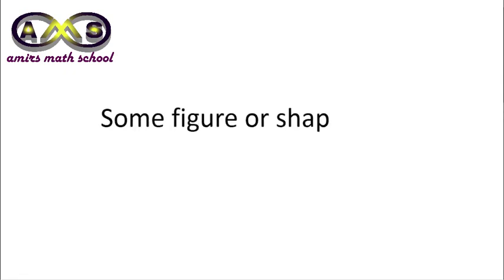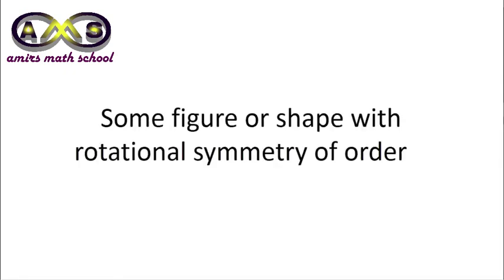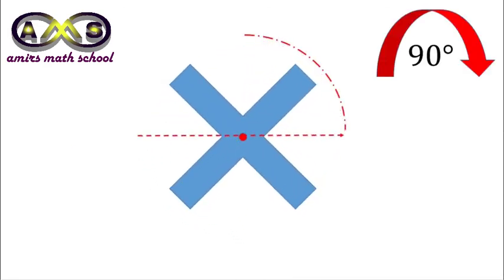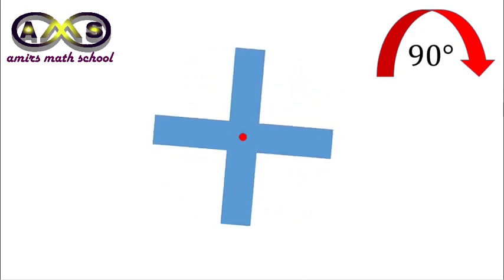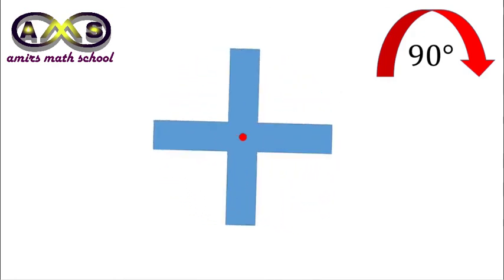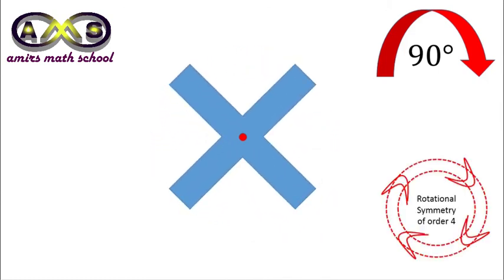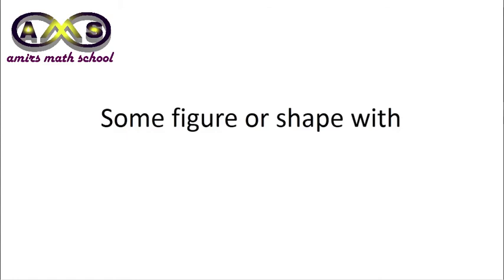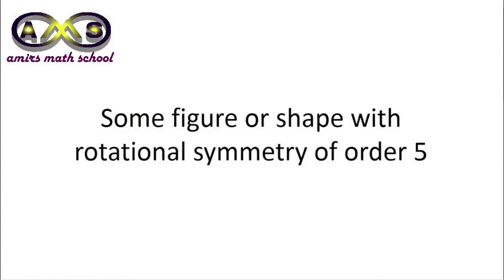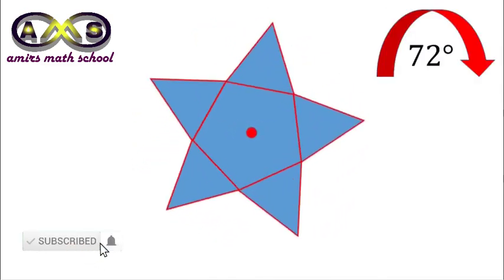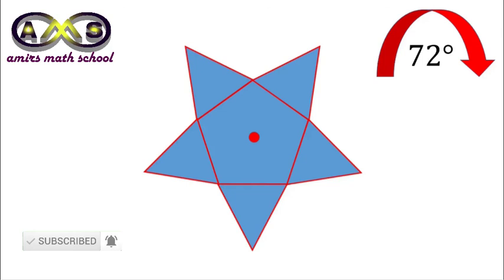Some figures or shapes with rotational symmetry of order 4. For this figure, after 90 degree rotation, it occupies its initial position. For 180 degree, it occupies the initial position; and for 270 degree and 360 degree, the result is the same. So, this figure has rotational symmetry of order 4. Some figures or shapes with rotational symmetry of order 5. After 72 degree rotation, this figure comes back to its initial position again. So, this figure has rotational symmetry of order 5.